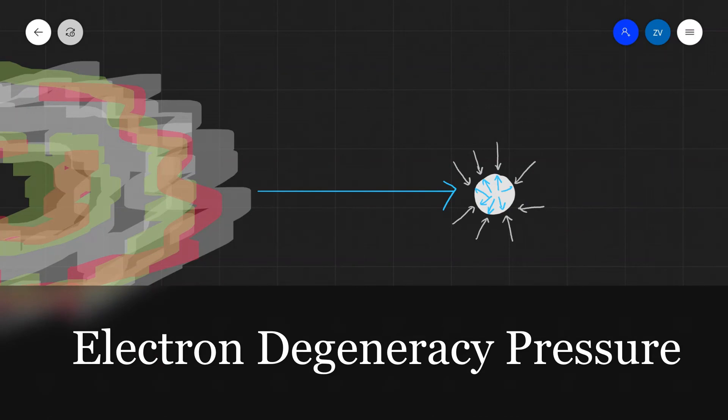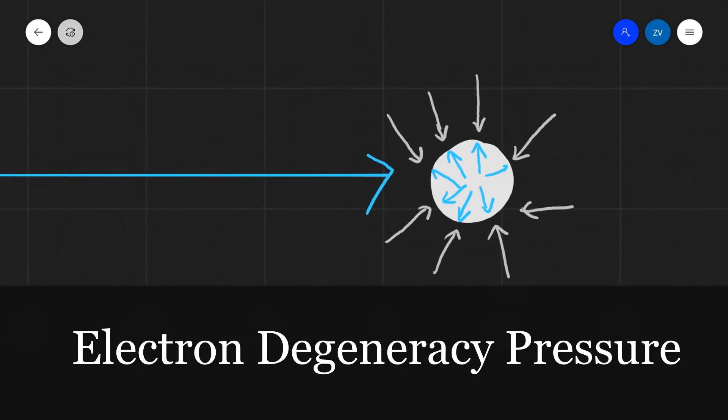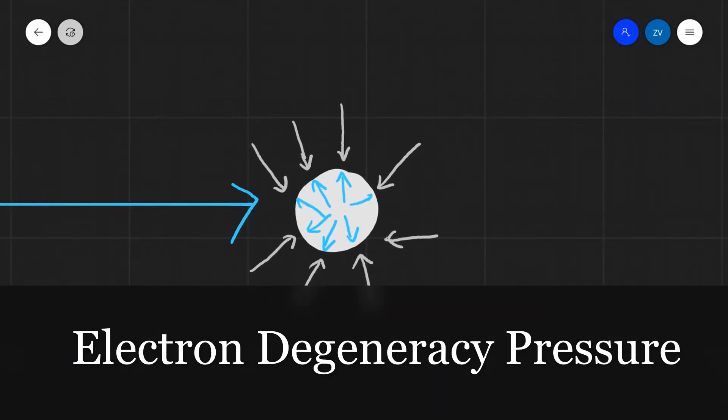What's opposing the crushing force of gravity in a white dwarf star is a phenomenon known as electron degeneracy pressure. Once all this mass is compressed, it's the electrons themselves that oppose the crushing effect of gravitation. There's a principle in physics known as Pauli's exclusion principle which says that no two electrons can occupy the same quantum state. In other words, electrons do not like being very close to each other. The electron degeneracy pressure provides a stable opposition to the crushing effect of gravitational force.